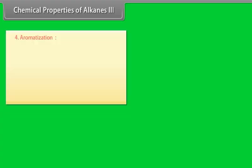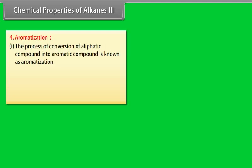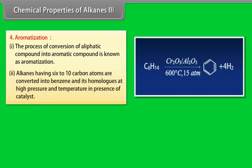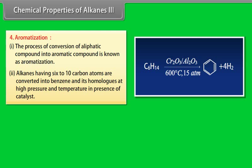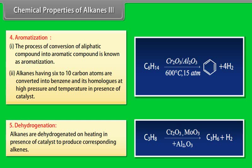Aromatization: 1. The process of conversion of aliphatic compound into aromatic compound is known as aromatization. 2. Alkanes having 6 to 10 carbon atoms are converted into benzene and its homologues at high pressure and temperature in presence of catalyst. Dehydrogenation: 3. Alkanes are dehydrogenated on heating in presence of catalyst to produce corresponding alkenes.